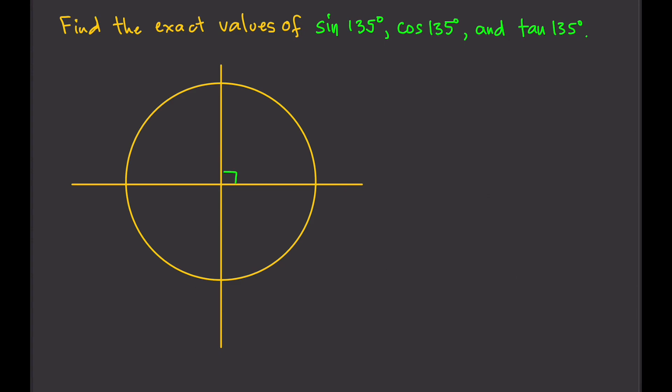How do we do that? Well, we know that this is 90, and if we add 45 to 90, that gives us 135. So if we're going to add 45 degrees, that's here.